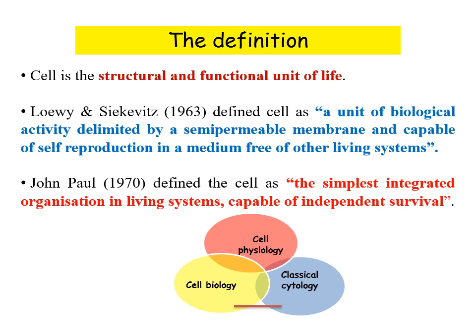Many scientists put forward their best words to define cells. Lowy and Schickiewicz in 1963 defined a cell as 'a unit of biological activity delimited by a semi-permeable membrane and capable of cell reproduction in a medium free of other living systems,' conveying the idea of repetition and cell reproduction. Another scientist, John Paul, in 1970 defined the cell as 'the simplest integrated organization of living systems capable of independent survival.' The branch of biological science that deals with structure, function, molecular organization, growth, reproduction, and genetics of cells is called cytology or cell biology.